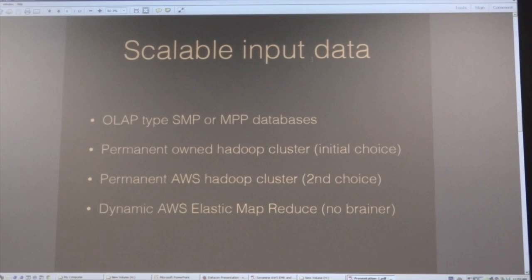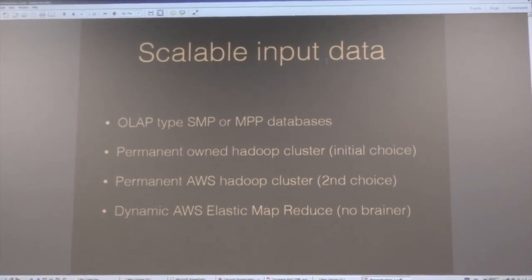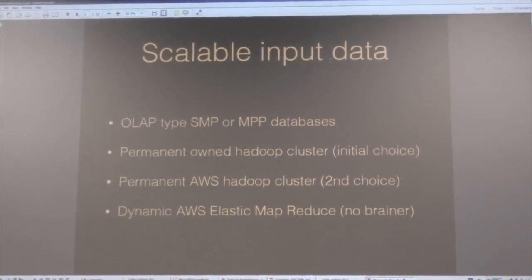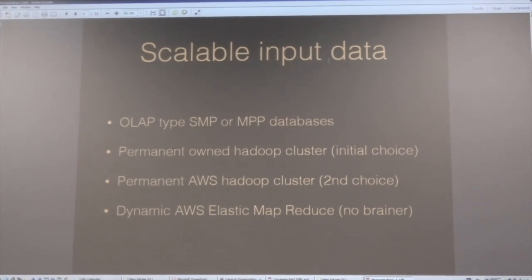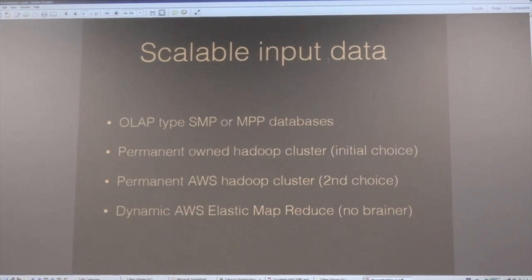That's what we did in 2009 — that was our first choice. Get the machines, put them in a data center. Tweaking it will drive you crazy. Upgrading it will drive you crazy. Sometime in 2010-2011, we made the choice to go to Amazon to stand up a permanent Hadoop cluster. We can add virtual machine images without having to buy hardware and ship it to the data center. That's great — second choice.